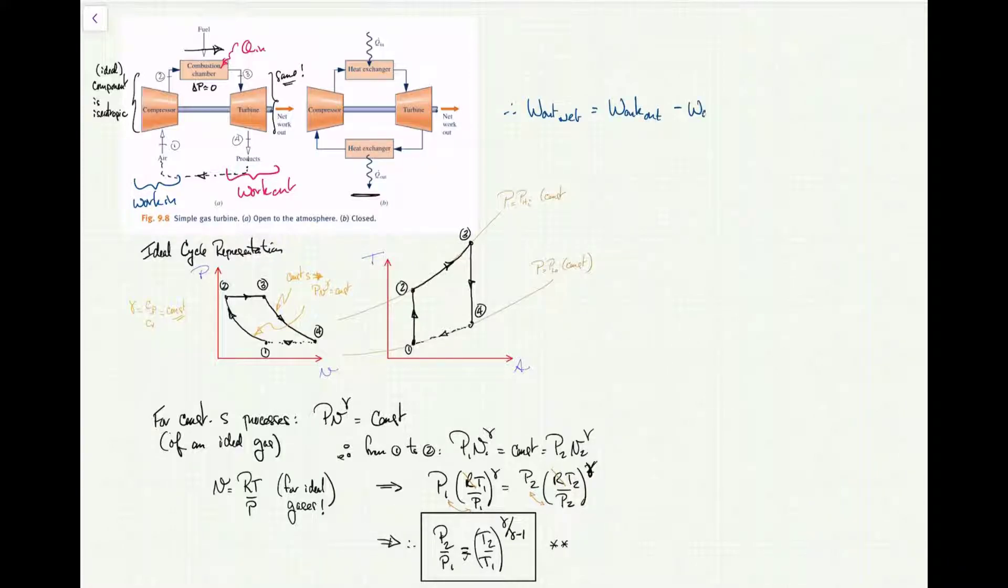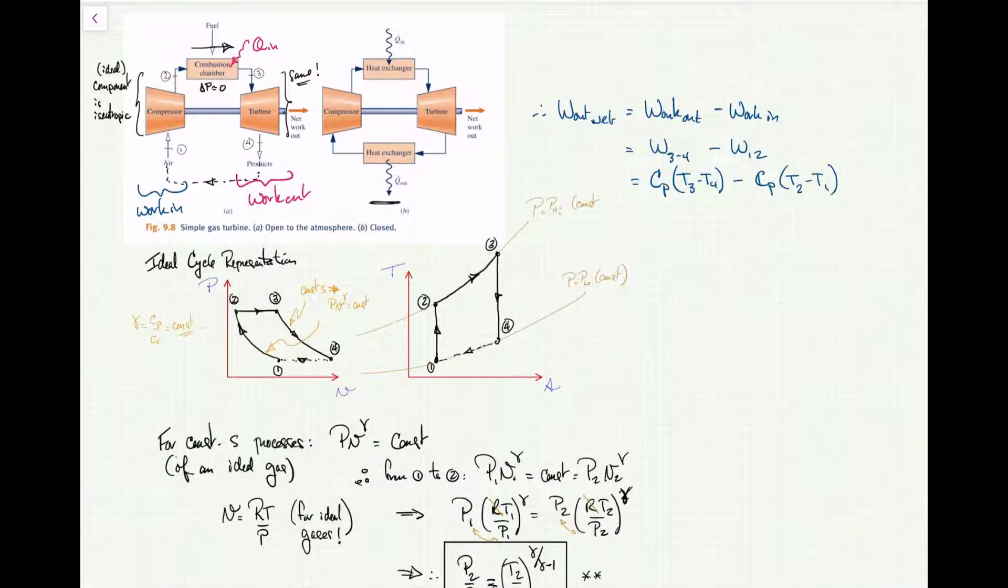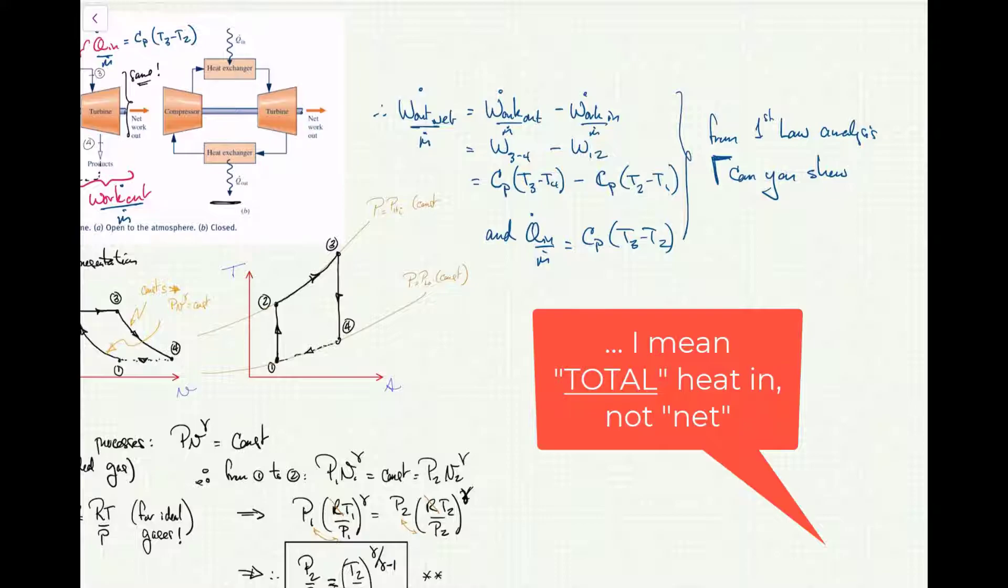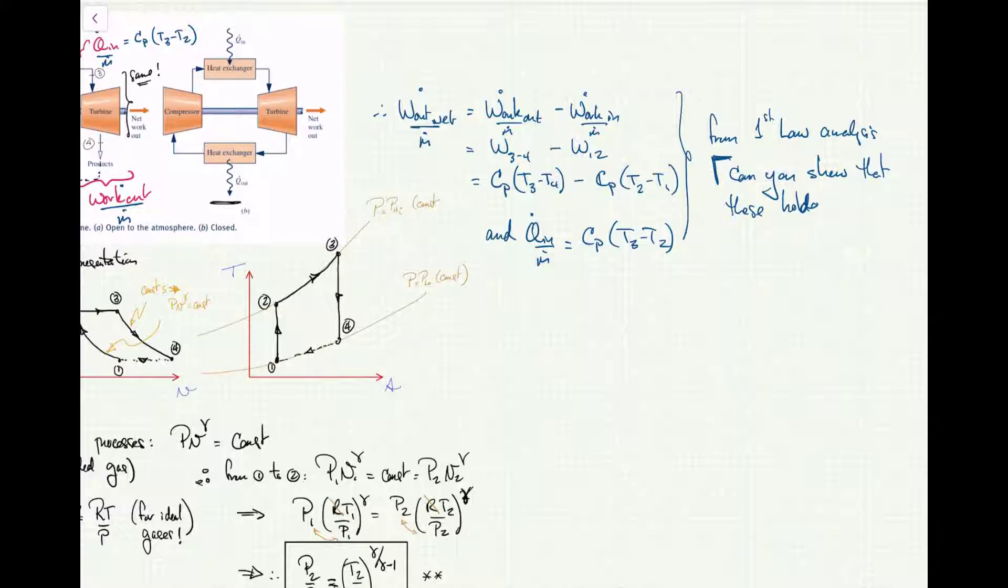That's going to be my net work: work between 3 and 4 minus the work between 1 and 2. For an ideal gas on a per mass basis, that would be c_p times the change in temperature for both of these components. So what I'm looking at is the rate of work out divided by the mass flow rate through the component. Similarly for the heat in, the rate of heat in is Q_dot divided by m_dot, which equals c_p times the change in temperature.